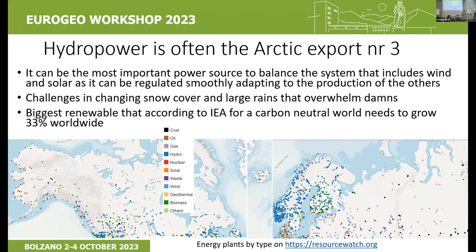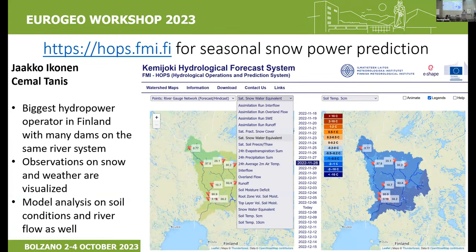Work in the eShape and Performer projects for Eurogeo aims to create a 'snow power' service — quantifying the energy potential stored in a snowpack. This service, hops.fmi.fi, was developed by Jaakko Ikonen and Cemal Tannis for Finland's biggest hydropower operator, which has 21 dams and one large river delta (the Gemi river). Key parameters include seasonal forecasts, which are crucial because the Nordic countries share a single energy market based on bidding and buying in a stock-exchange style — releasing the right amount of energy at the right time is critical.